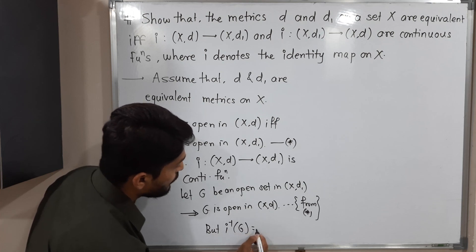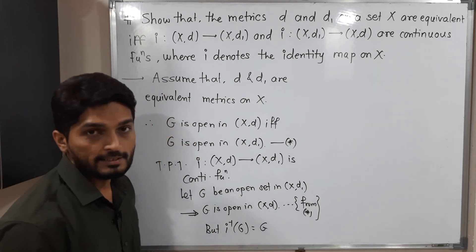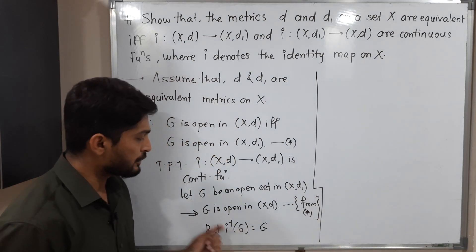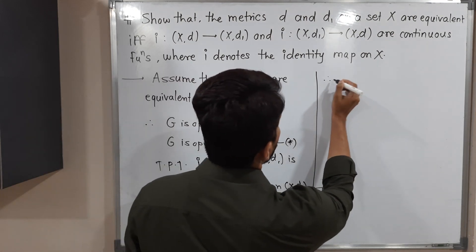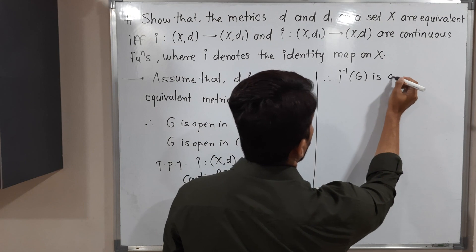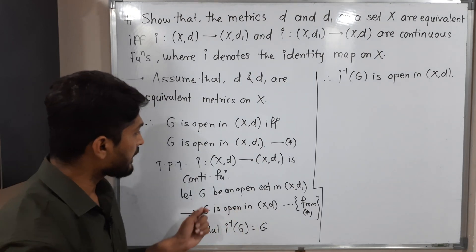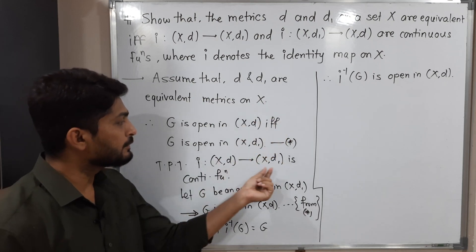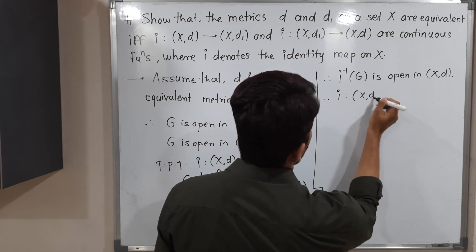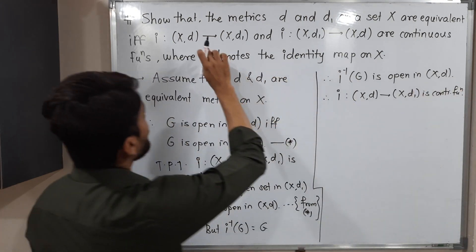Since i is the identity function, its inverse image is also the identity, so i⁻¹(G) = G. Therefore i⁻¹(G) is open in (X,d). We started with any open set G in (X,d1) and proved its inverse image is open in (X,d). Therefore i from (X,d) to (X,d1) is a continuous function.